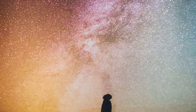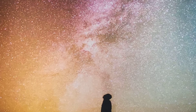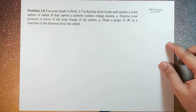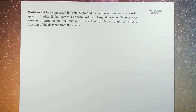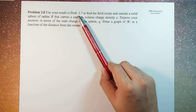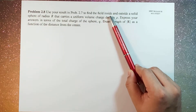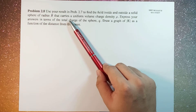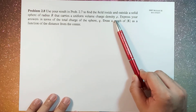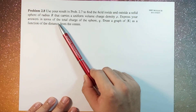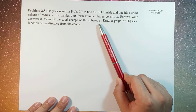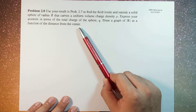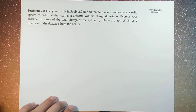What's up guys, it's me Sir Ernest, and today we're going to solve problem 2.8 of Griffith's 4th edition. The problem reads: use your result in problem 2.7 to find the field inside and outside the solid sphere of radius R that carries a uniform volume charge density rho. Express your answers in terms of the total charge of the sphere Q, and draw the graph of the magnitude of E as a function of the distance from the center.